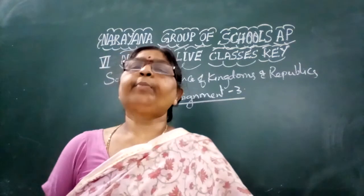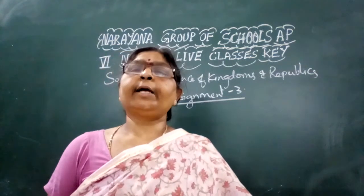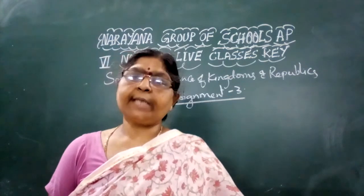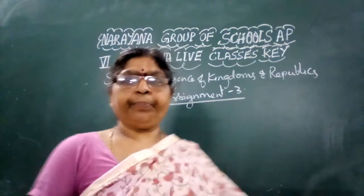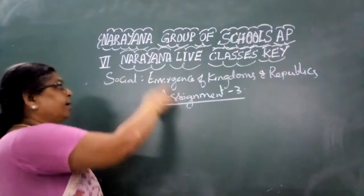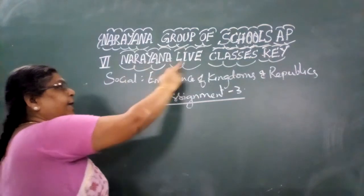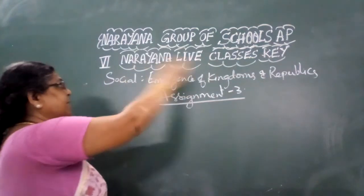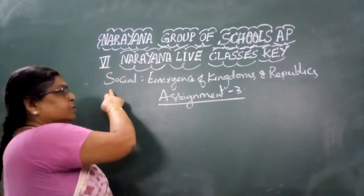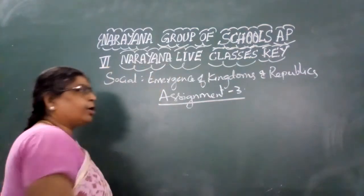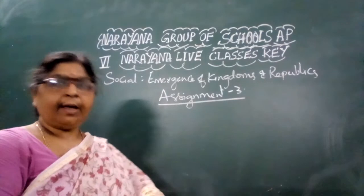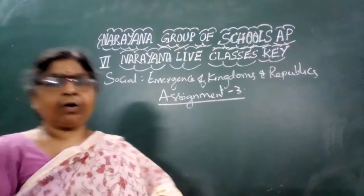Good morning children, welcome to Narayana Life Classes — the discussion of Assignment 3. This is the Narayana Life Classes Assignment 3 Key for Class 6 Social Studies, Topic: Emergence of Kingdoms and Republics.